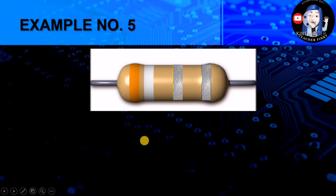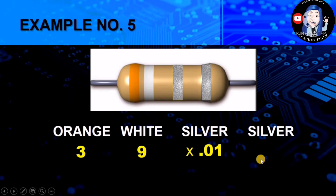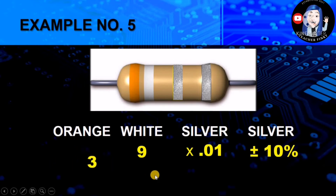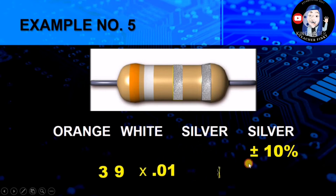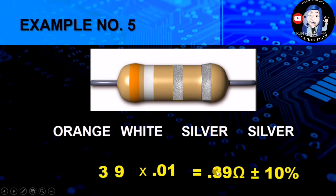Next example: we have orange, white, silver, and silver. Orange has a value of 3, white is 9. Silver as the multiplier has a value of times 0.01, while the other silver as tolerance has a value of plus/minus 10%. Putting them together, 39 times 0.01 gives an answer of 0.39 ohms plus/minus 10%. Another thing to remember: if the multiplier is silver, there should be a decimal point before the first digit.